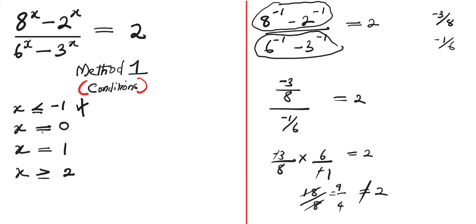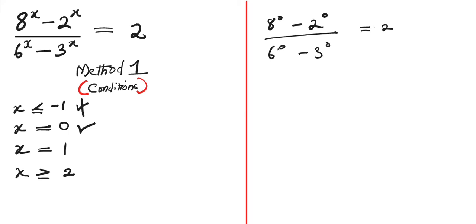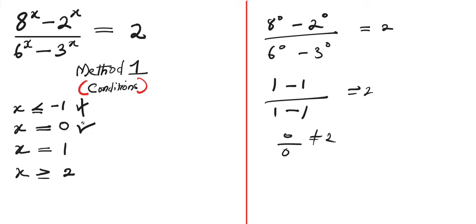Now let's consider when x equals 0. We have 8 to the power of 0 minus 2 to the power of 0, divided by 6 to the power of 0 minus 3 to the power of 0, which should equal 2. Since any number to the power of 0 is 1, this gives (1 - 1)/(1 - 1) = 0/0, which is indeterminate. So x = 0 is absolutely out of the line.